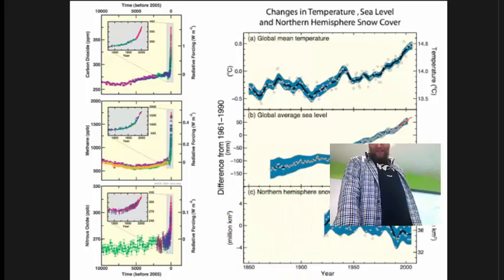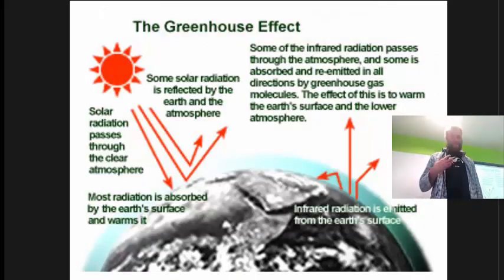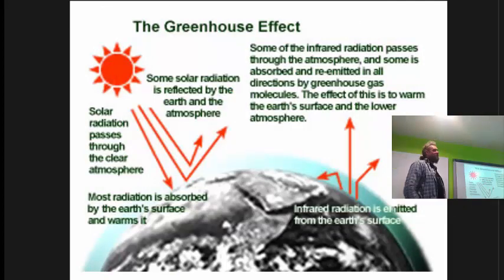In order to understand that, we need to look at the greenhouse effect, and this is the natural greenhouse effect. This was first described by Fourier, the Fourier Transform, in 1827.